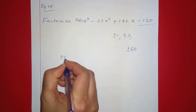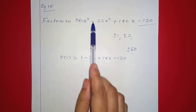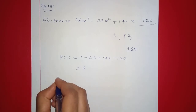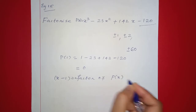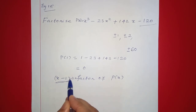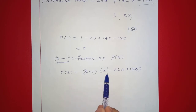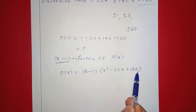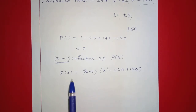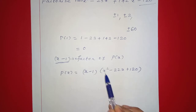We try p(1): 1 minus 23 plus 142 minus 120, which equals 0. Since p(1) equals 0, x minus 1 is a factor of p(x). Now we divide p(x) by x minus 1, giving the quotient x squared minus 22x plus 120. So p(x) equals x minus 1 times x squared minus 22x plus 120.